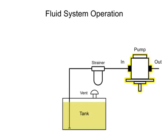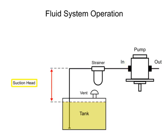If the pump is mounted higher than the reservoir, the height from the fluid surface to the pump inlet is called the suction head. If pump suction is used to elevate the fluid, suction head should be kept to a minimum to prevent generation of a vacuum effect on the pump inlet fluid.